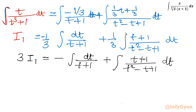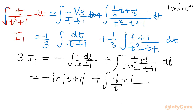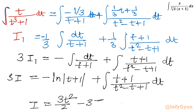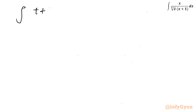The first integration is straightforward: it is minus ln mod (t plus 1). For the second integral we need to evaluate the integration of (t plus 1) over (t squared minus t plus 1) dt.